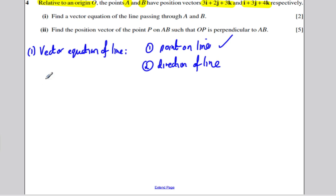To get a direction of the line, let's see what the direction is to get from A to B. It's the position vector B, subtract the position vector A, would give us how to get from A to B. So that would be equal to I plus 3J plus 4K, subtract 3I plus 2J plus 3K.